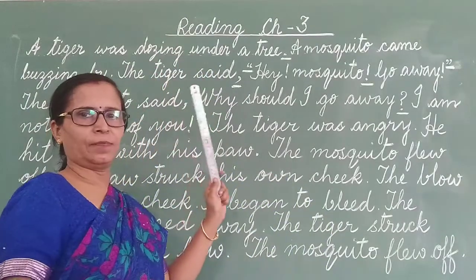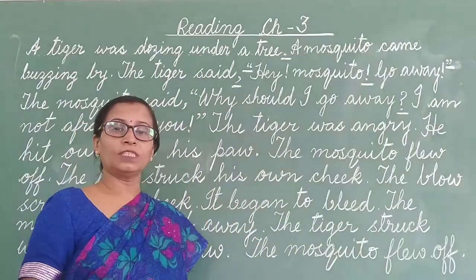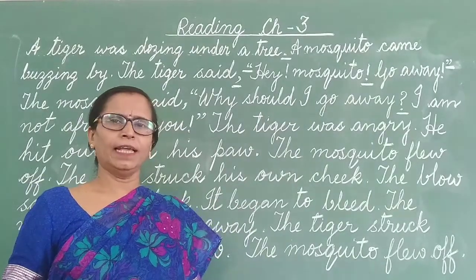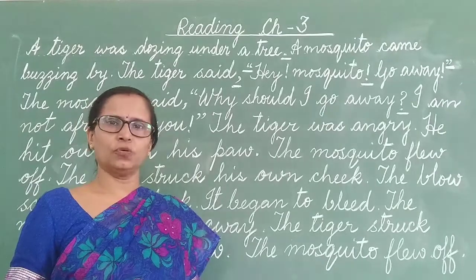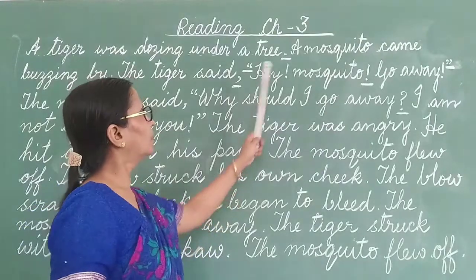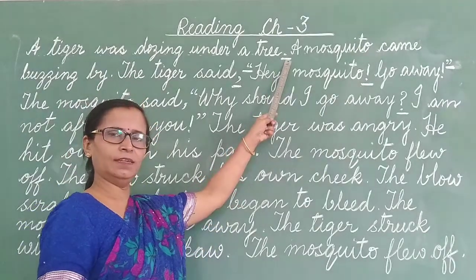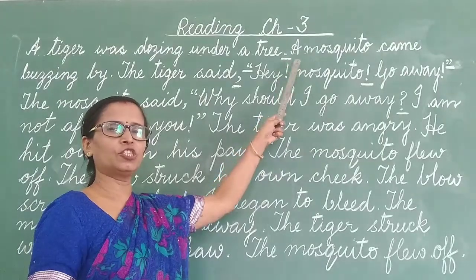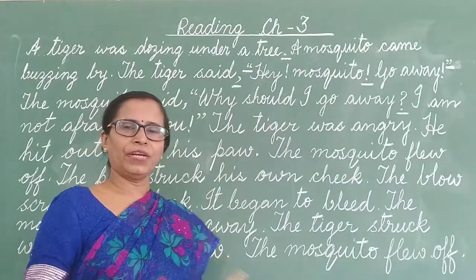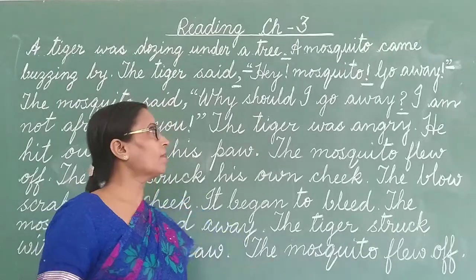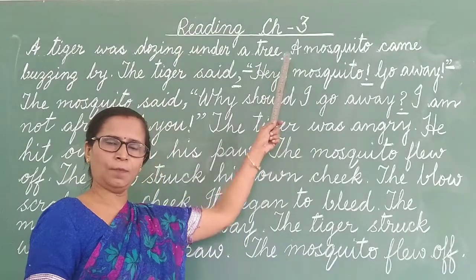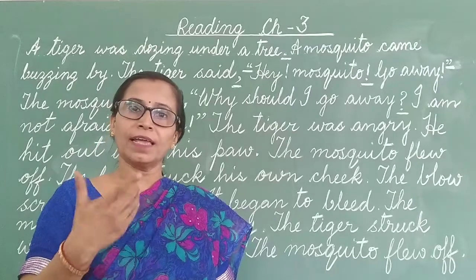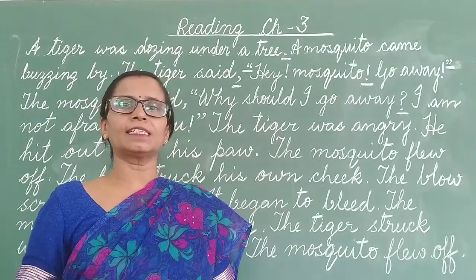See children, you should follow some rules while reading — reading anything, maybe a lesson or a story. What is this sign, children? Full stop. When you read a sentence and there is a full stop, you will stop for some time and then again start the next sentence.